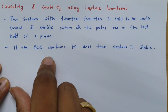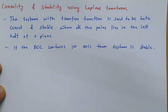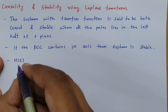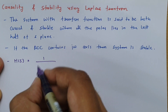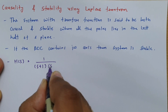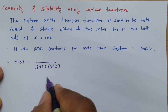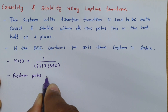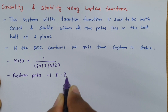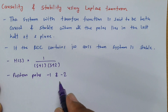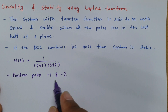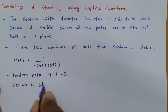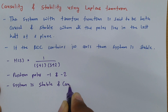I will explain this with some examples so it will be more clear. Consider the first case where we have transfer function H(S) equal to 1 divided by (S+1)(S+2). Here we can say the position of poles is at minus 1 and minus 2. Based on that we can directly say this system is stable and causal.